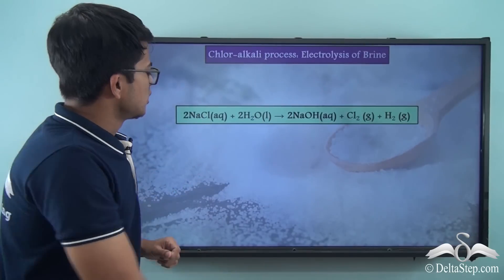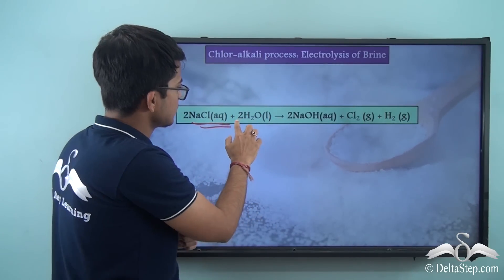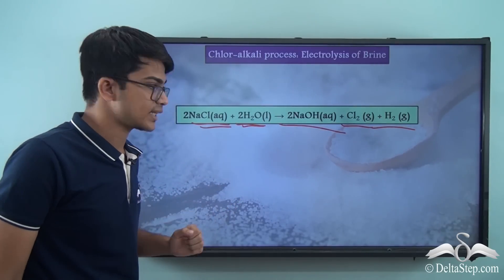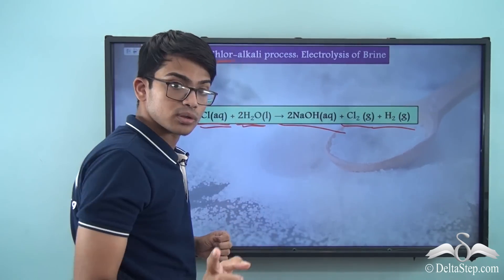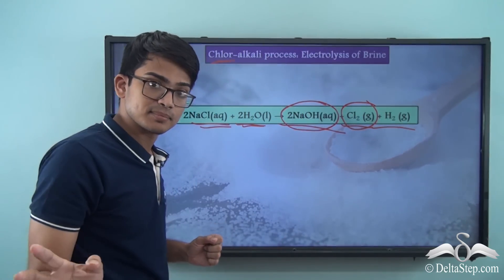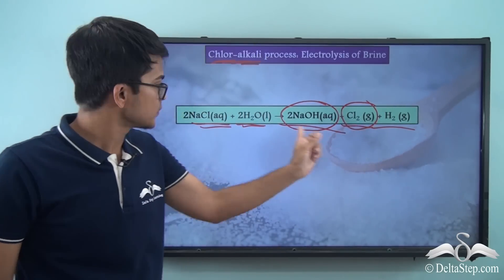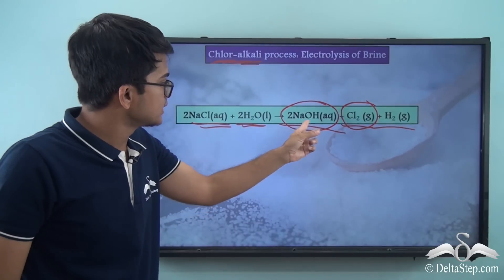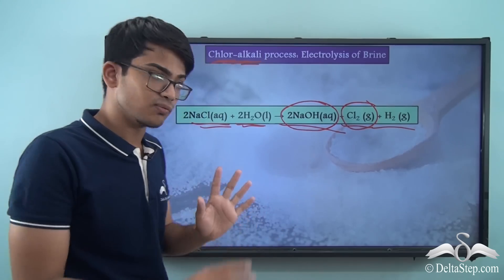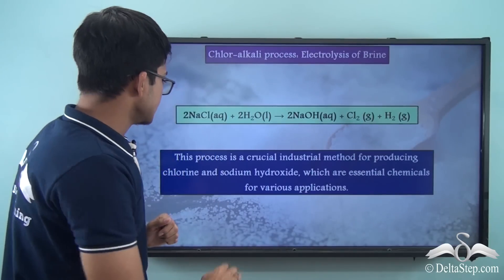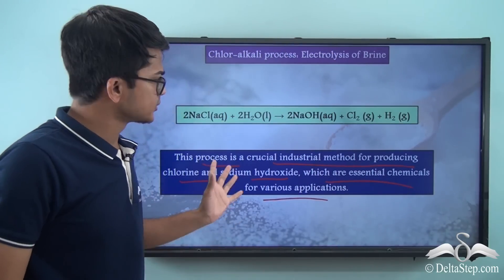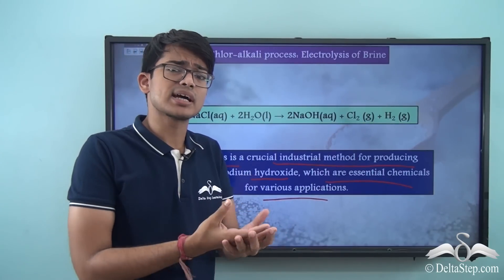The equation is: 2NaCl (aq) + 2H₂O (l) → 2NaOH + Cl₂ + H₂. So we get chlorine, hydrogen, and sodium hydroxide. 'Chlor' refers to chlorine being manufactured, and sodium hydroxide is an alkali, so 'chlor' and 'alkali' are both present in the products - which is why the process is named the chloralkali process. This is a crucial industrial method of producing chlorine and sodium hydroxide.